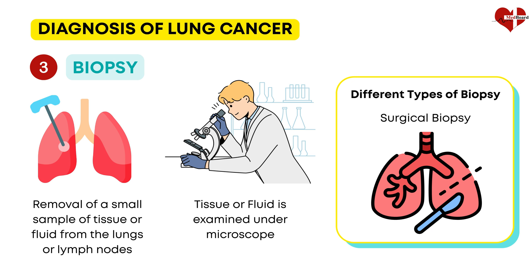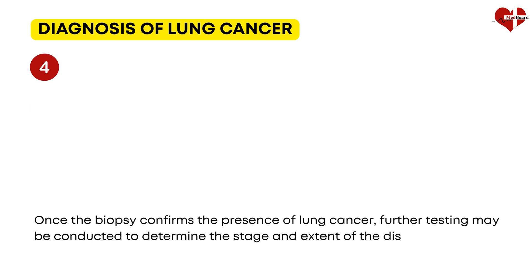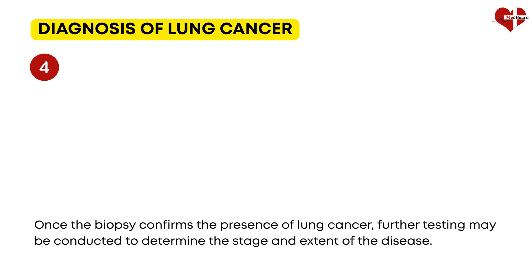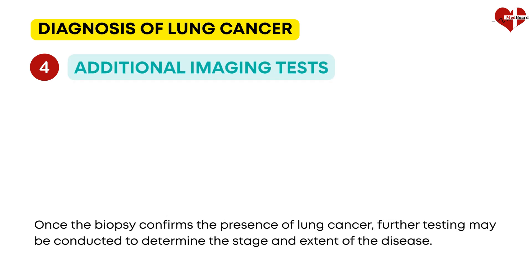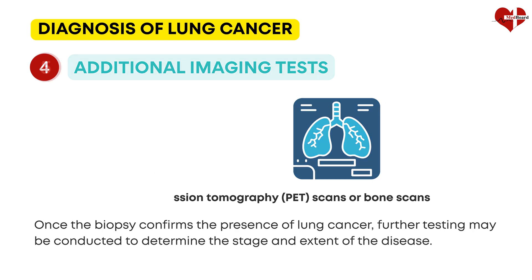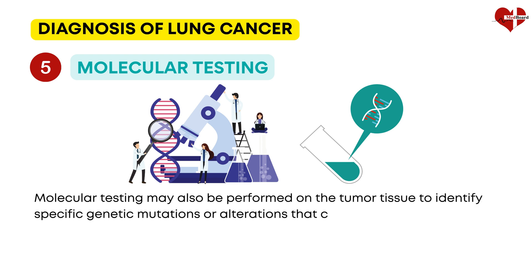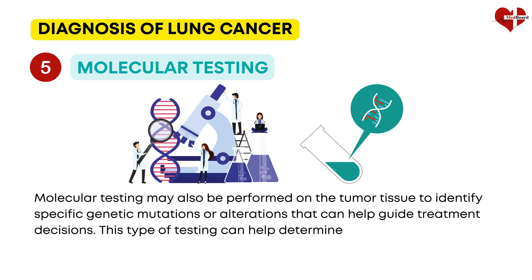Once the biopsy confirms the presence of lung cancer, further testing may be conducted to determine the stage and extent of the disease. This may include additional imaging tests such as positron emission tomography (PET) scans or bone scans, to check for the spread of cancer to other parts of the body. In some cases, molecular testing may also be performed on the tumor tissue to identify specific genetic mutations or alterations that can help guide treatment decisions and determine if targeted therapies or immunotherapies are appropriate for the patient.